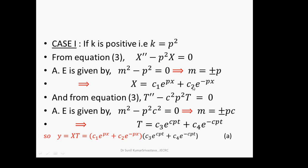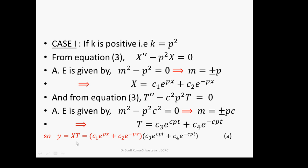Similarly, for T: T'' − c²p²T = 0. The auxiliary equation gives m = ±cp, so T = c₃e^(cpt) + c₄e^(−cpt). Therefore, the solution when k is positive is y = (c₁e^(px) + c₂e^(−px))(c₃e^(cpt) + c₄e^(−cpt)).